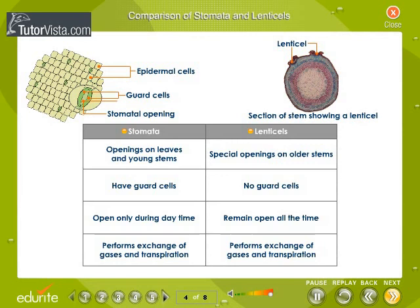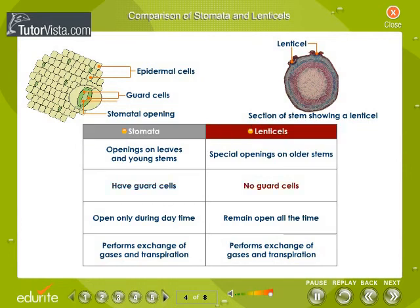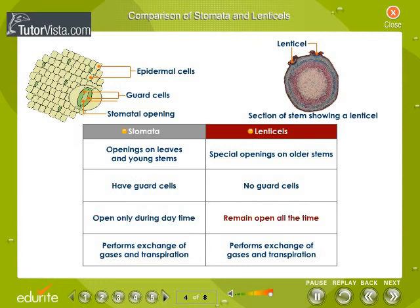Comparison of stomata and lenticels. Observe the diagram carefully to find out the differences between lenticels and stomata, shown here in the form of a table. Stomata are found in young stems and leaves whereas lenticels are found in older stems. Guard cells are absent in lenticels whereas they are present in stomata. Stomata are open during the daytime whereas lenticels remain open all the time. Both stomata and lenticels perform exchange of gases and transpiration.